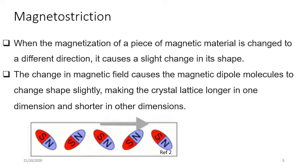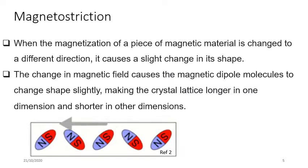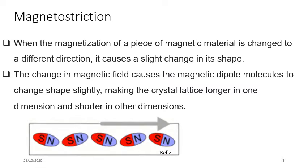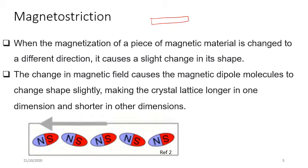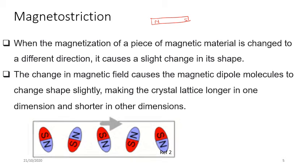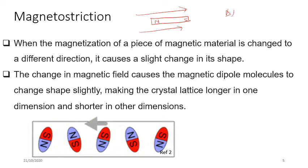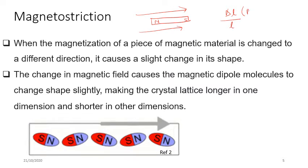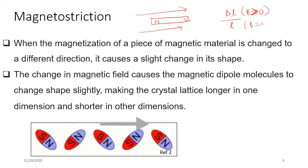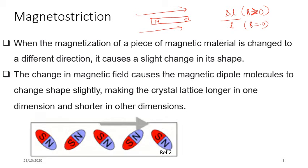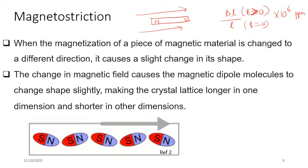Another effect we study is magnetostriction: when the magnetization of a magnetic material changes direction, it causes a slight change in its shape. Magnetostriction is quantified as the change in length divided by original length, measured when magnetic field is applied (H > 0) versus when it is not applied (H = 0), multiplied by 10⁶ to express it in parts per million (ppm).